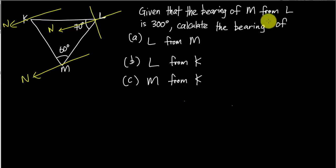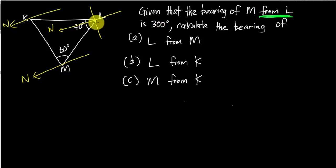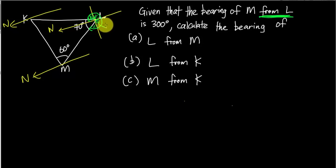The first thing: 'the bearing of M from L' — when I say 'from L' it means the angle is at L. So first I find the north of L, and then the angle rotates clockwise 300° until it touches the line connecting M and L. I rotate from the north until I touch the line LM. The angle here is 300°, which is given.